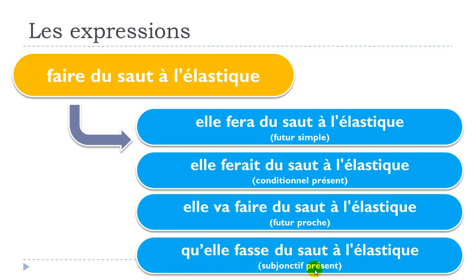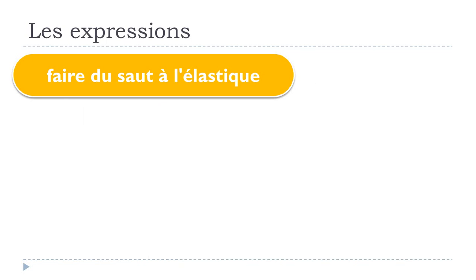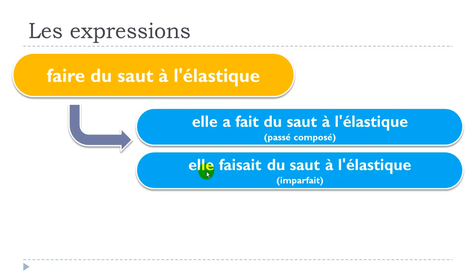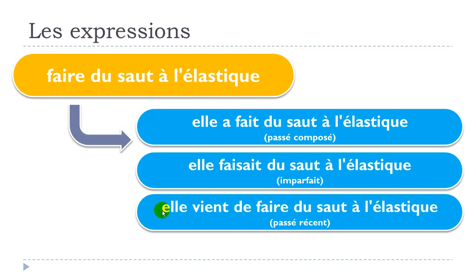Now let's see the past tenses. 'Elle a fait du saut à l'élastique' — this is passé composé. 'Elle faisait du saut à l'élastique' — this is imparfait. 'Elle vient de faire du saut à l'élastique' — passé récent.